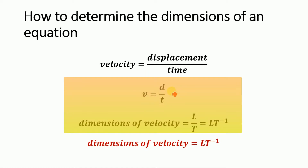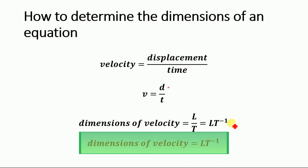We will determine the dimensions of velocity. We know that the dimension of displacement is L and the dimension of time is T. Shifting T from the denominator, we can write the dimension of velocity as L T to the power of minus 1. So the dimensions of velocity are L T to the power of minus 1.